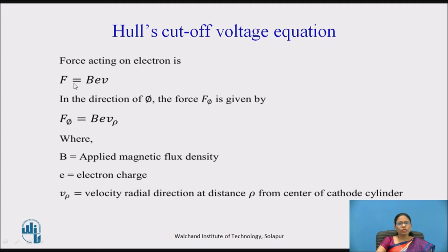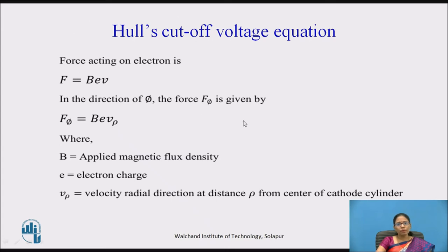The force acting on an electron is F = BEV, where B is the magnetic flux density, E is the electron charge, and V is the velocity. In the phi direction, the force F_phi is given as F_phi = BEV_rho, because rho is the radial direction and V_rho is the velocity in the radial direction, indicating the electron is moving from cathode to anode. Here B is the applied magnetic flux density, E is the electron charge, and V_rho is the velocity in the radial direction at a distance rho from the center of the cathode cylinder.